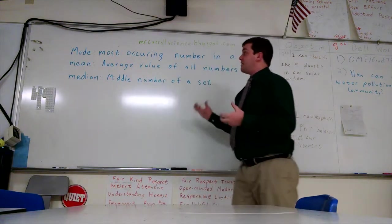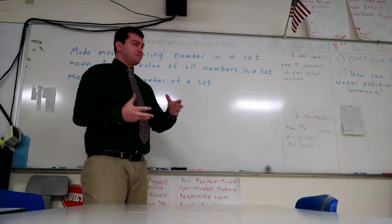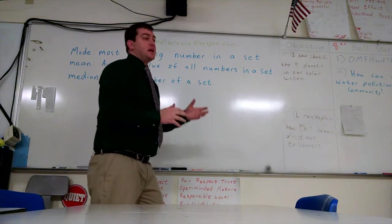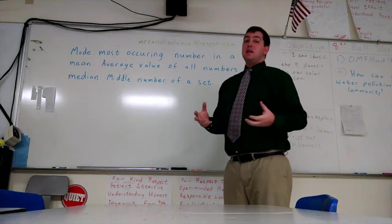The mean is the average value of all numbers in a set. So what that means is you have five numbers, you add them all together, divide by five, and that gives you the average, and that's what we call the mean.